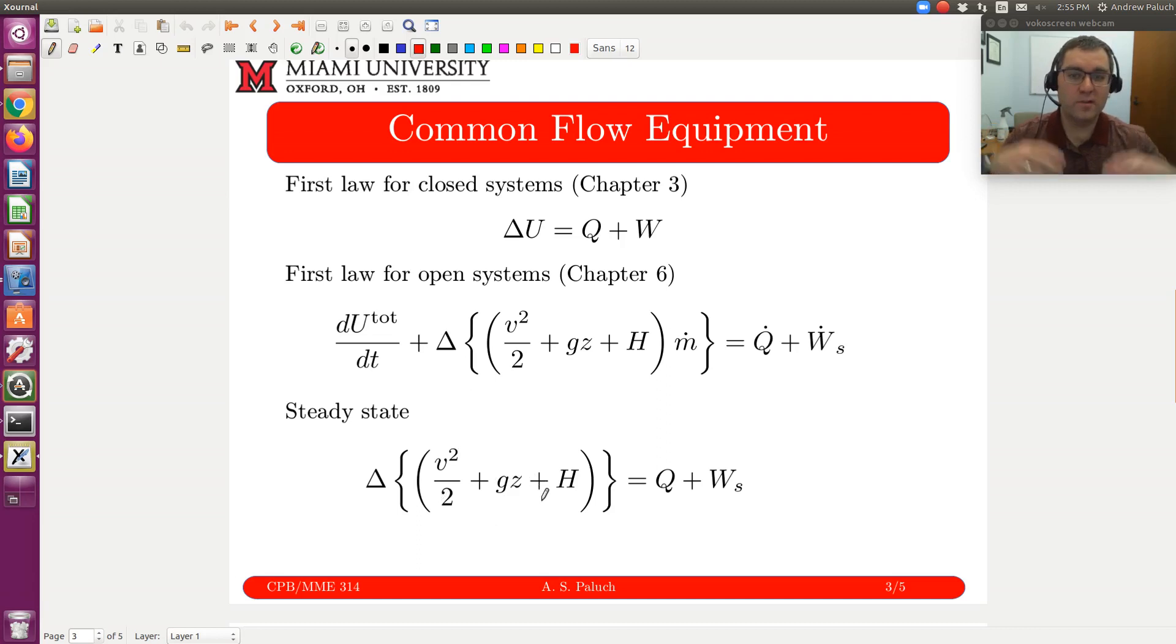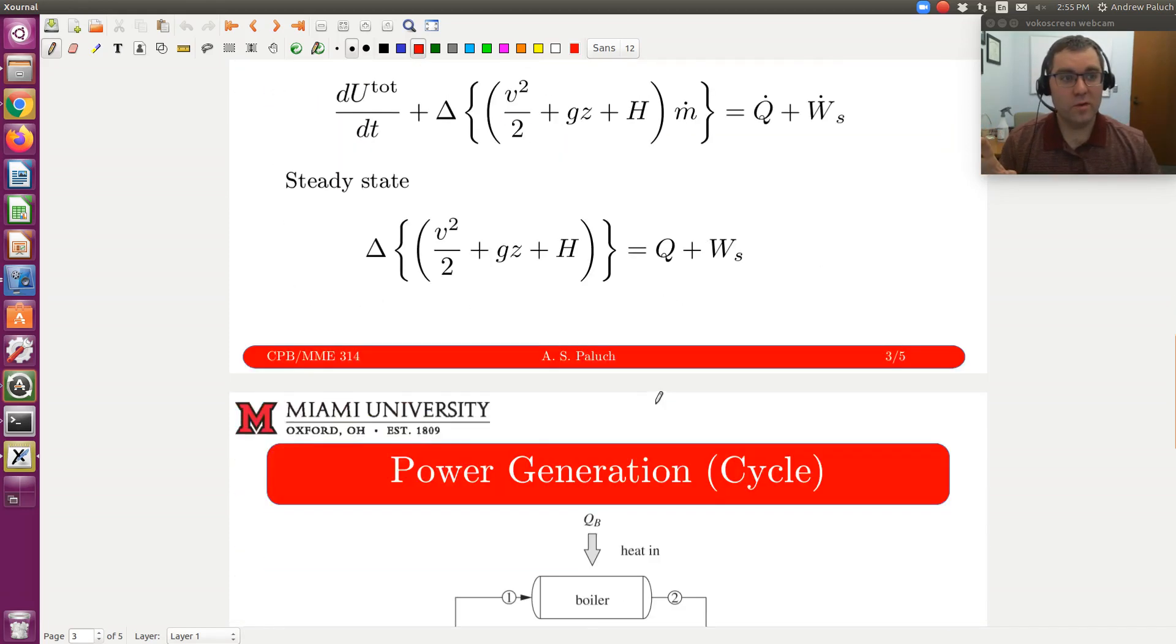Contrast that to our first law for closed systems, where now instead of delta U, we have delta H, and on the right-hand side, our work term here, we're only going to be concerned with shaft work. We're not going to be concerned with PV boundary work.